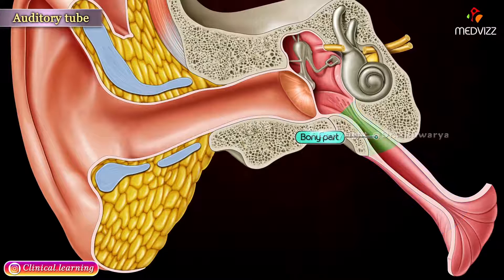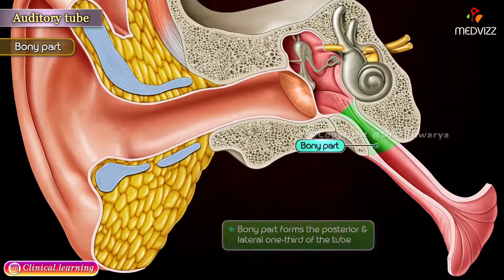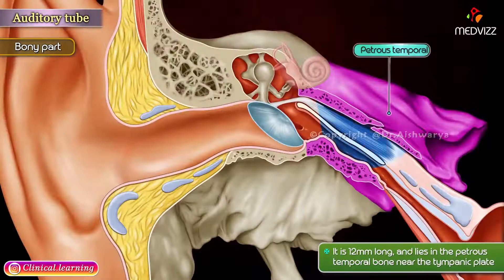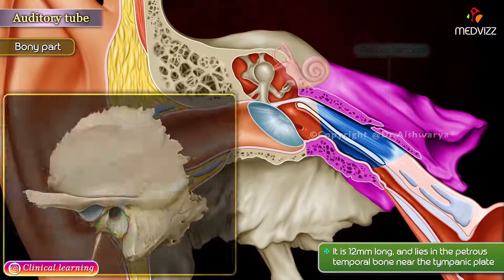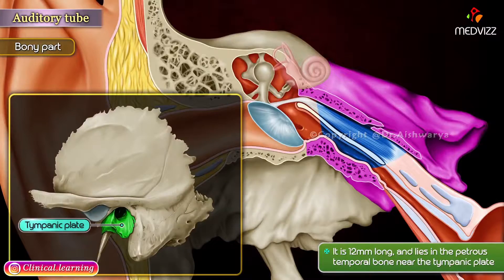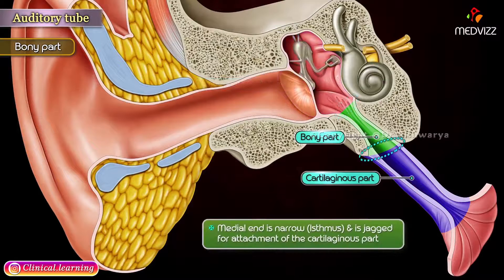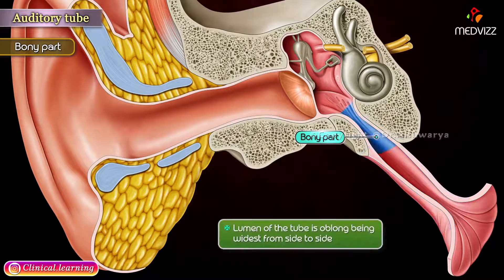The tube is divided into bony and cartilaginous parts. The bony part forms the posterior and lateral one-third of the tube. It is 12 mm long and lies in the petrous part of the temporal bone near the tympanic plate. Its lateral end is wide and opens onto the anterior wall of the middle ear cavity. The medial end is narrow and jagged for attachment of the cartilaginous part. The lumen of the tube is oblong, being widest from side to side.